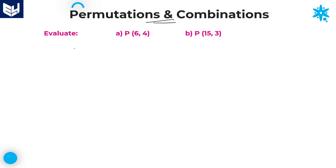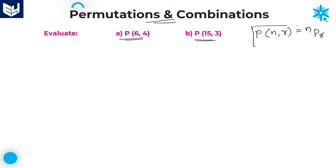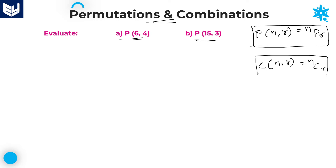See the first question: Evaluate. Two parts are given — one is P(6,4) and the second one is P(15,3). First of all, P(6,4) — here it is nothing but P(n,r), which indicates nPr. In the similar fashion, C(n,r) indicates nCr. So C(n,r) is equal to nCr, and P(n,r) is equal to nPr.